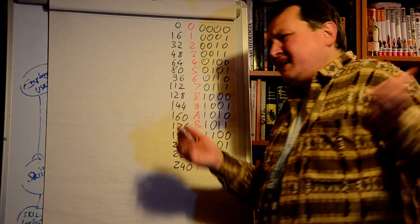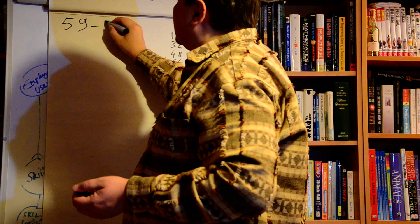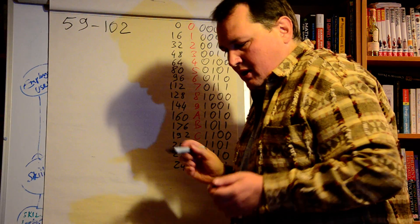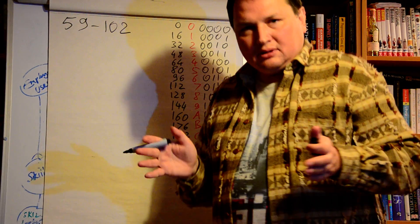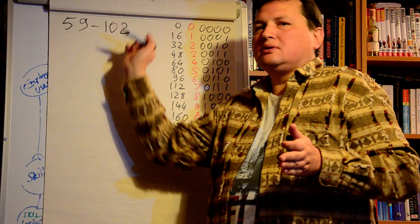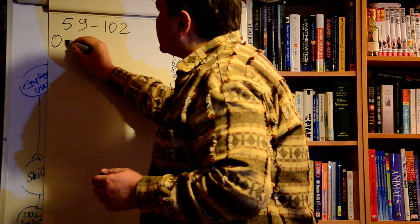Let's take any calculation like 59 minus 102. I recommend, as a first step, to convert this decimal operation into hexadecimal numbers.